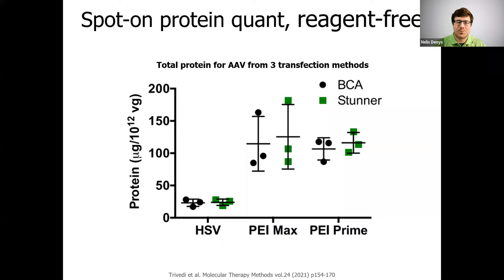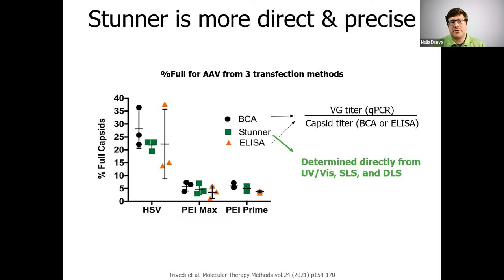And finally, to get the percent full value, the researchers either divided the genome titer by the capsid titer that they got from either ELISA or BCA, or they just used Stunner's direct percent full result. The ELISA capsid titers weren't shown in the previous graph, but they were two times higher than either BCA or Stunner, driving the ELISA percent full values a lot lower. Overall, ELISA is a more rigorous technique, but it gives a lot more variable data. Stunner will deliver more precise results in a one-step direct measurement, while also giving you genome titer and capsid titer.